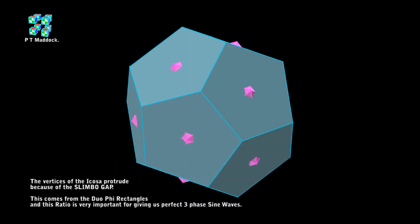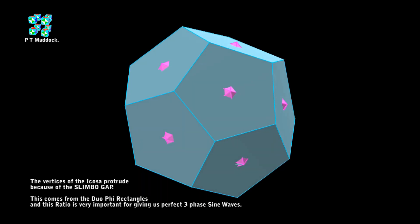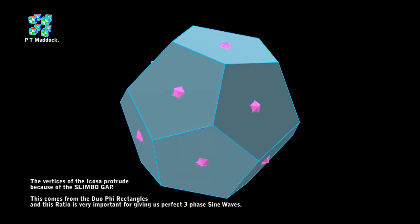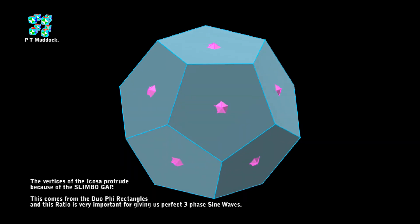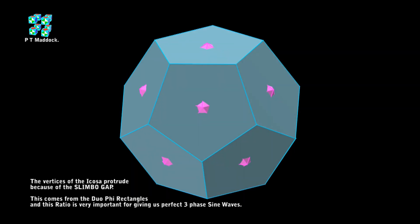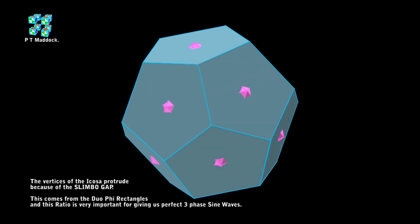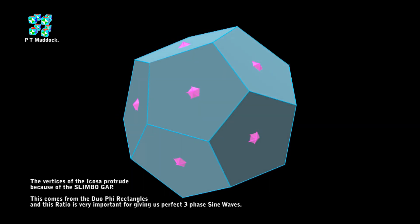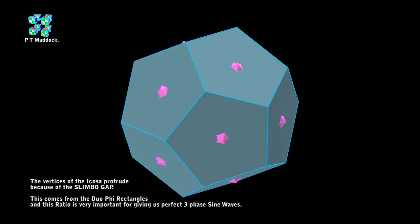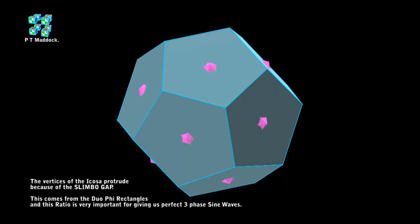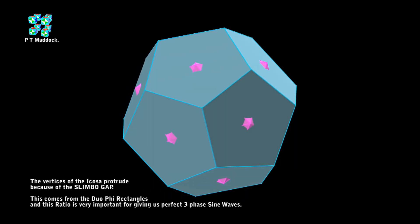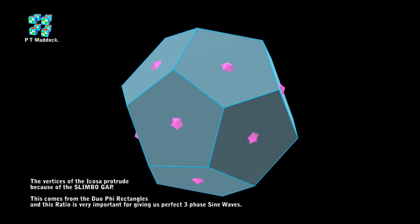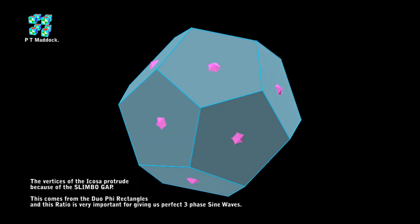Now I'm going to take you to the solid version of this. As this is spinning around, you can see the vertices of the icosa sticking out a little bit — I call these the slimbo nipple, the slimbo gap. Now when I showed the dual rectangles, they were interrelated perfectly in phi.